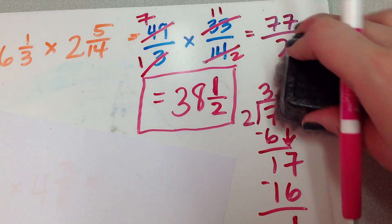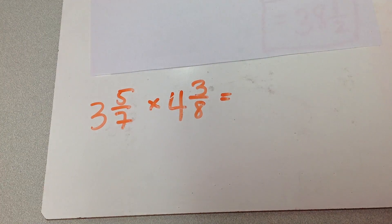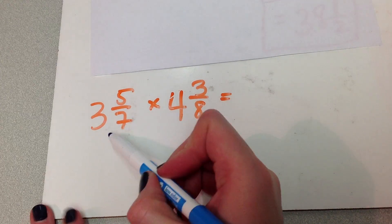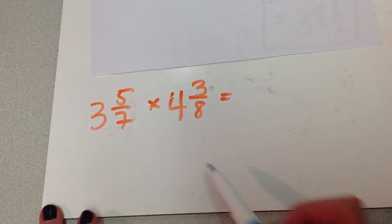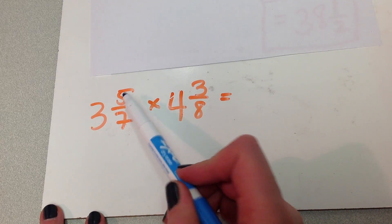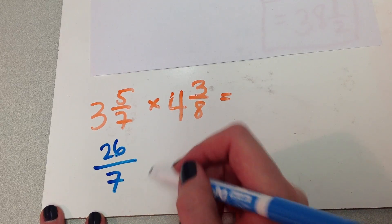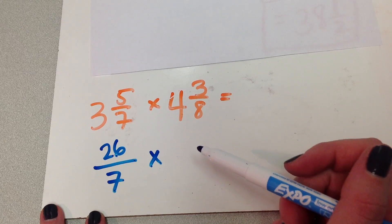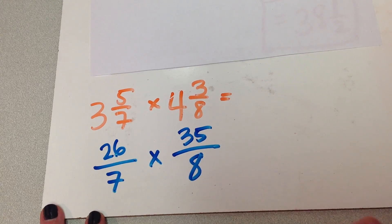That was a lot — let's look at another example. Here is our next problem: 3 and 5 sevenths times 4 and 3 eighths. The first thing I have to do is convert both of these guys to improper fractions because they're both mixed numbers. So: 3 times 7 is 21, plus 5 is 26 — bottom number stays the same. 4 times 8 is 32, plus 3 is 35 — bottom number stays the same.